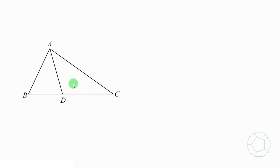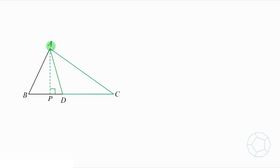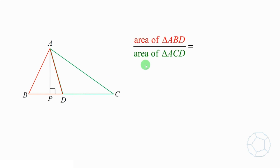Look at a simpler figure. Let's find the area of the red triangle ABD. If we take DB as the base, then we draw the height AP. Can you see that AP is also the height of the green triangle ACD? Although the two triangles are totally different — one is an acute angle triangle and the other is an obtuse angle triangle — they share the same height.